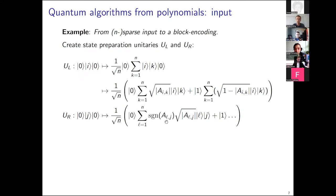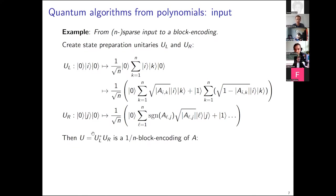The sign in U_R comes from wanting to encode a_{ij} rather than |a_{ij}|. Since we're taking square roots we need the absolute value, then put the sign into one of the two operators. For complex matrices you use an arbitrary phase instead of just the sign.